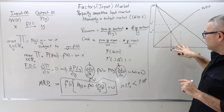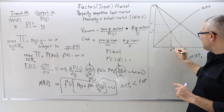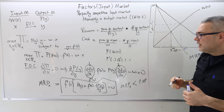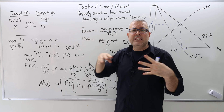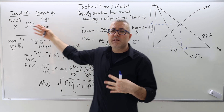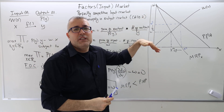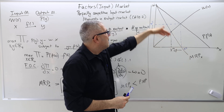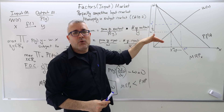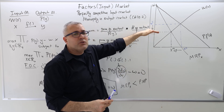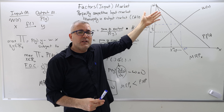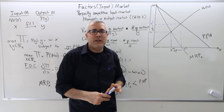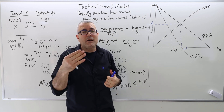In the labor market, the result is that the monopolist hires fewer workers and pays lower wages. Whether the demand or supply curves are linear or not, this is generally the case: the monopolist will hire at most the same amount and pay at most the same wage as in the competitive case — never more.